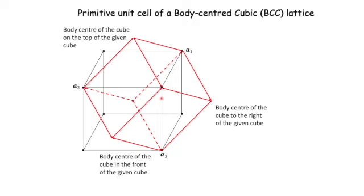It is useful to express the primitive basis vectors A1, A2, and A3 in terms of unit vectors E1, E2, E3, shown in green here. These are unit vectors along the edges of the original cube. I want to express A1 in terms of E1, E2, and E3.